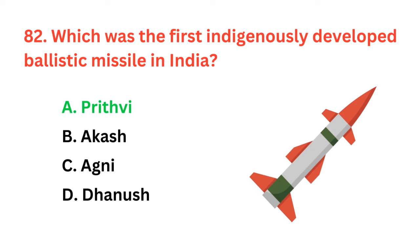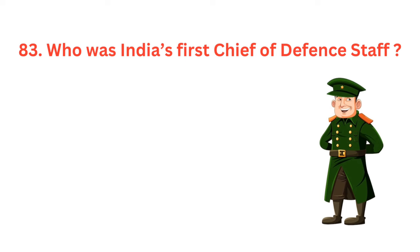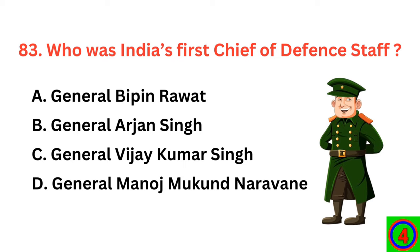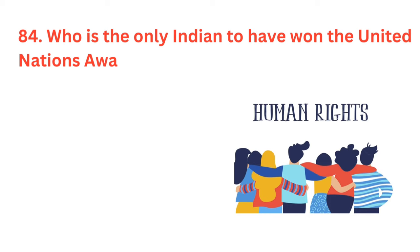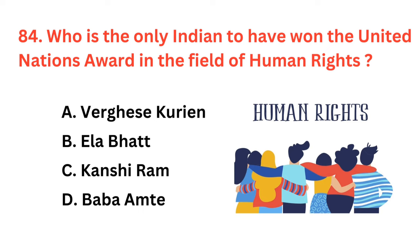Who was India's first Chief of Defence Staff? The correct answer is option A: General Bipin Rawat. Who was the only Indian to have won the United Nations Award in the field of Human Rights? The correct answer is option D: Baba Amte.